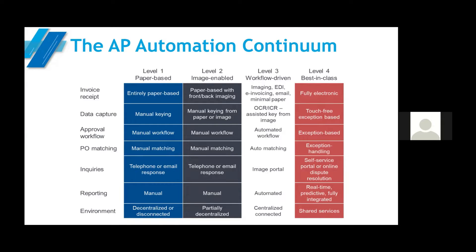When talking about AP automation, there is a four-level continuum. Level one is a totally manual AP process, entirely paper-based, in a decentralized environment. Level two is still manual but with support for imaging and only partially decentralized. Level three has the ability to receive invoices from multiple streams, deploys OCR technology with some manual assistance, automated workflow, PO matching, automated communication, and reporting in one centralized environment. Level four depicts best-in-class automation: fully electronic, exception-only-based processing, a self-service portal, real-time automated reporting, and a shared service-supported environment.